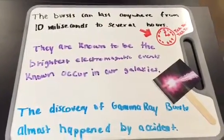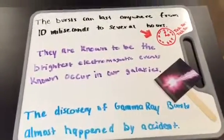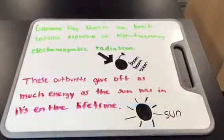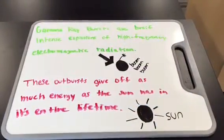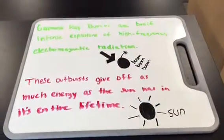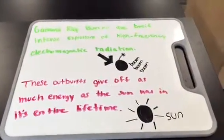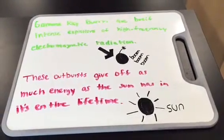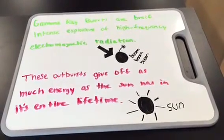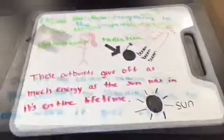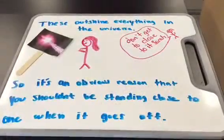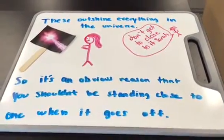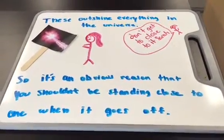The discovery of gamma ray bursts almost happened by accident. Gamma ray bursts are brief and intense explosions of high-frequency electromagnetic radiation. These outbursts give off as much energy as the sun has in its entire lifetime. These outshine everything in the universe, so it's an obvious reason that you shouldn't be standing next to one when it goes off.